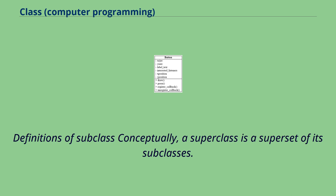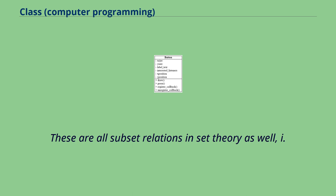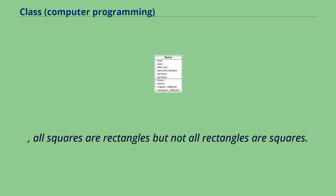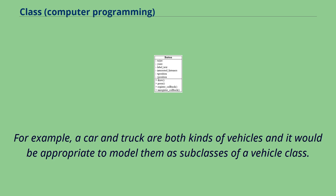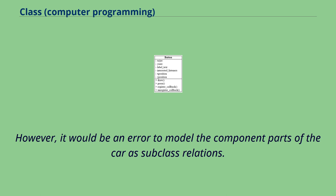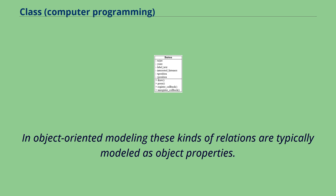Conceptually, a superclass is a superset of its subclasses. For example, a common class hierarchy would involve GraphicObject as a superclass of Rectangle and Ellipse, while Square would be a subclass of Rectangle. These are all subset relations in set theory — all squares are rectangles but not all rectangles are squares. A common conceptual error is to mistake a part-of relation with a subclass. For example, a car and truck are both kinds of vehicles and it would be appropriate to model them as subclasses of a vehicle class. However, it would be an error to model the component parts of the car as subclass relations — a car is composed of an engine and body, but it would not be appropriate to model engine or body as a subclass of car.